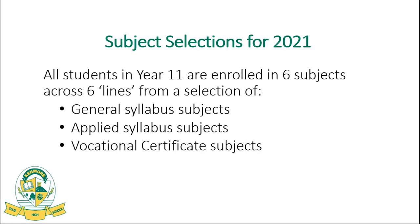Simplistically, the student's job is to make sure that they are in six subjects and fill their six lines next year in subjects — VET courses, general or applied — that are engaging and are appropriate to them. There are three different types of subjects on offer in the wide and diverse curriculum at Kenmore: general syllabus subjects, applied which are not as academically rigorous, and also our certificate courses or vocational subjects.